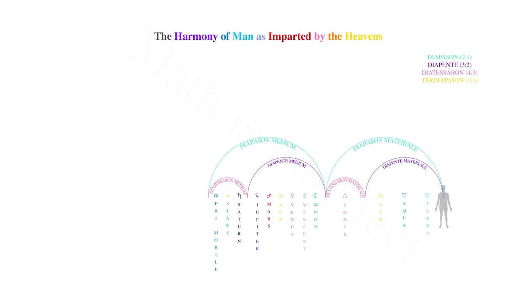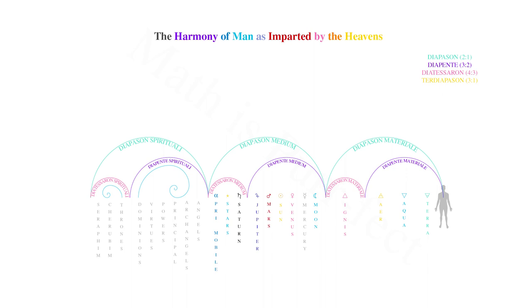Beyond the cosmos lies the spiritual fifth, or diapente spirituale, encompassing the first six levels of the celestial hierarchy: angels, archangels, principalities, powers, virtues, and dominions. Followed by the spiritual fourth, or diatessaron spirituale, encompassing the last three levels of thrones, cherubim, and seraphim. This is, of course, the spiritual octave, or diapeson spirituale.